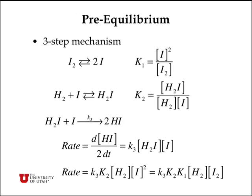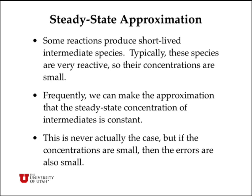We can take the equilibrium expressions for the first two reactions and substitute in for H2I first, and then secondly for the atom concentration, and finally end up with an expression where we have a bunch of constants times the H2 concentration times the I2 concentration. So this rate law can be first order in H2 and first order in I2, second order overall, and still be consistent with a three-step mechanism instead of just a single step reaction.